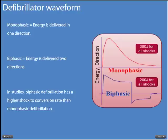There are two ways in which defibrillation can occur in terms of energy. There is monophasic, which means that energy is delivered in one direction, and there are biphasic defibrillators, which means that energy is delivered in two directions. In studies, biphasic defibrillation has a higher shock-to-conversion rate than monophasic defibrillation. Monophasic defibrillation also requires more joules — 360 joules — as opposed to biphasic, which normally requires around 200 joules for all shocks.